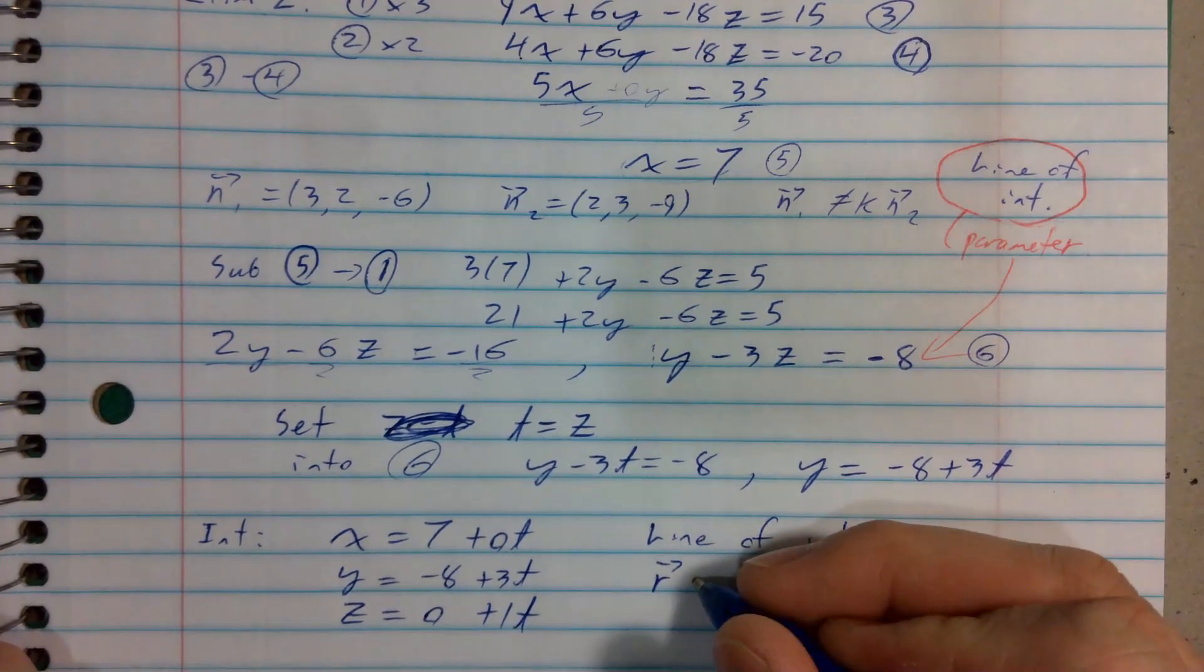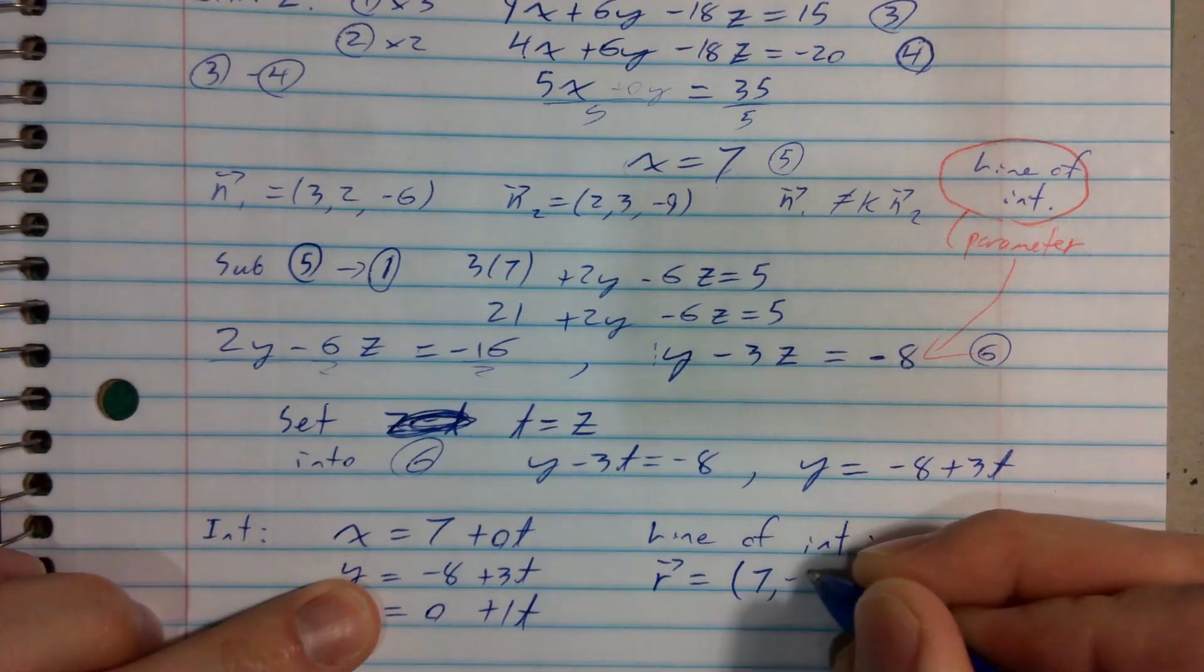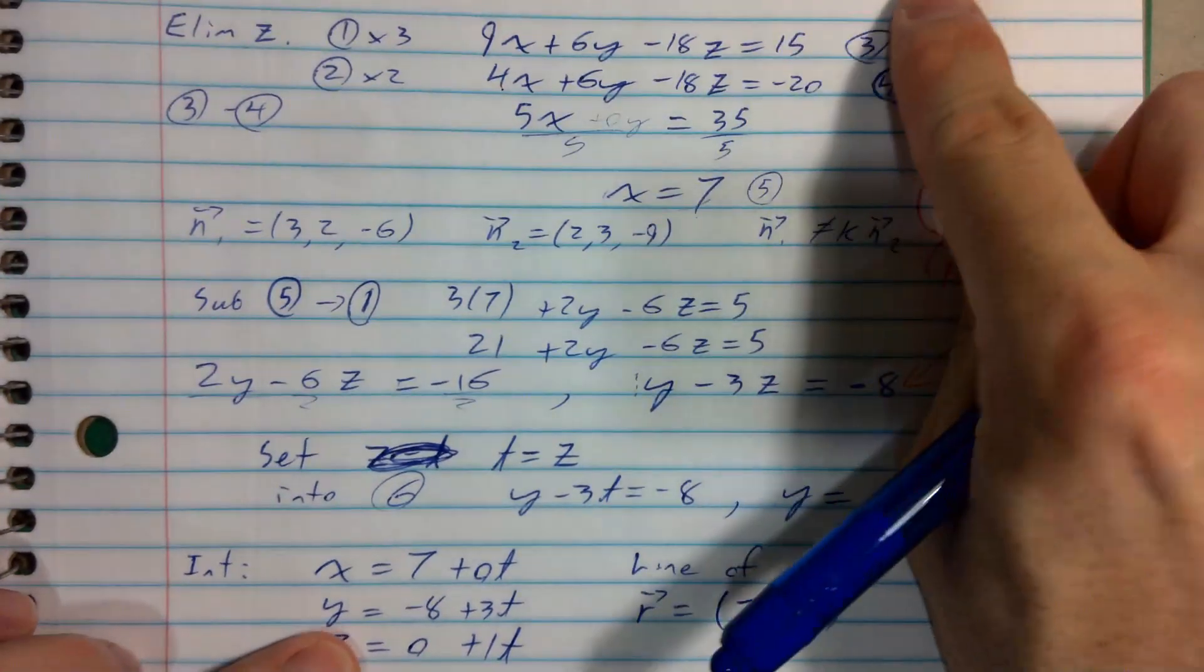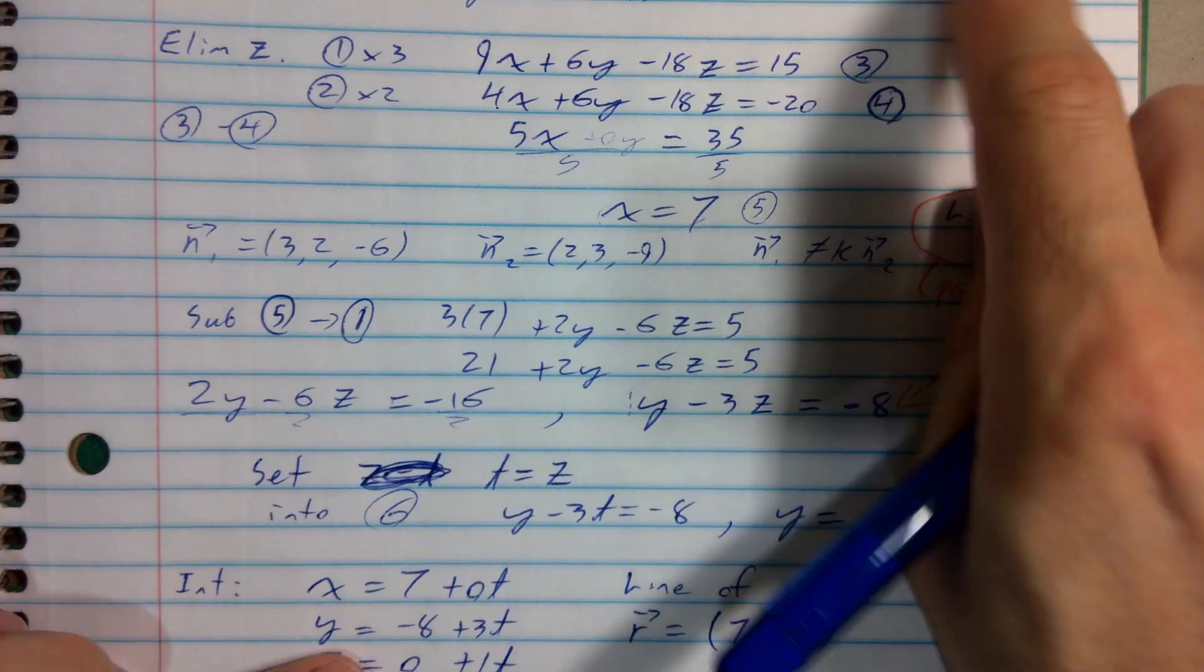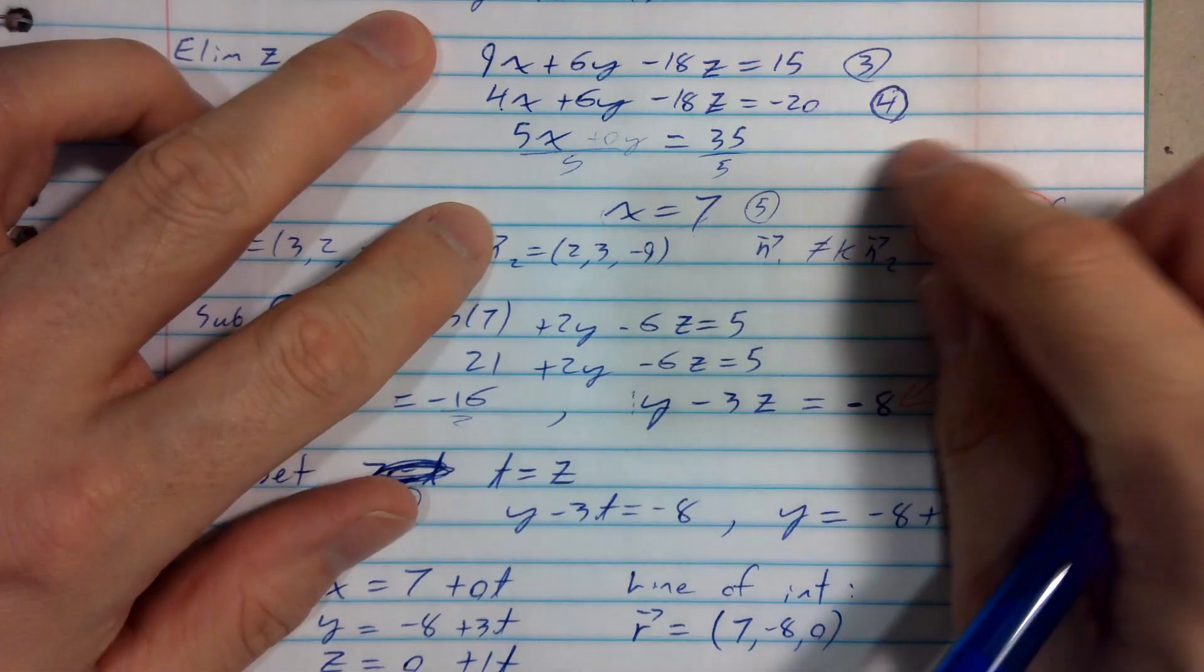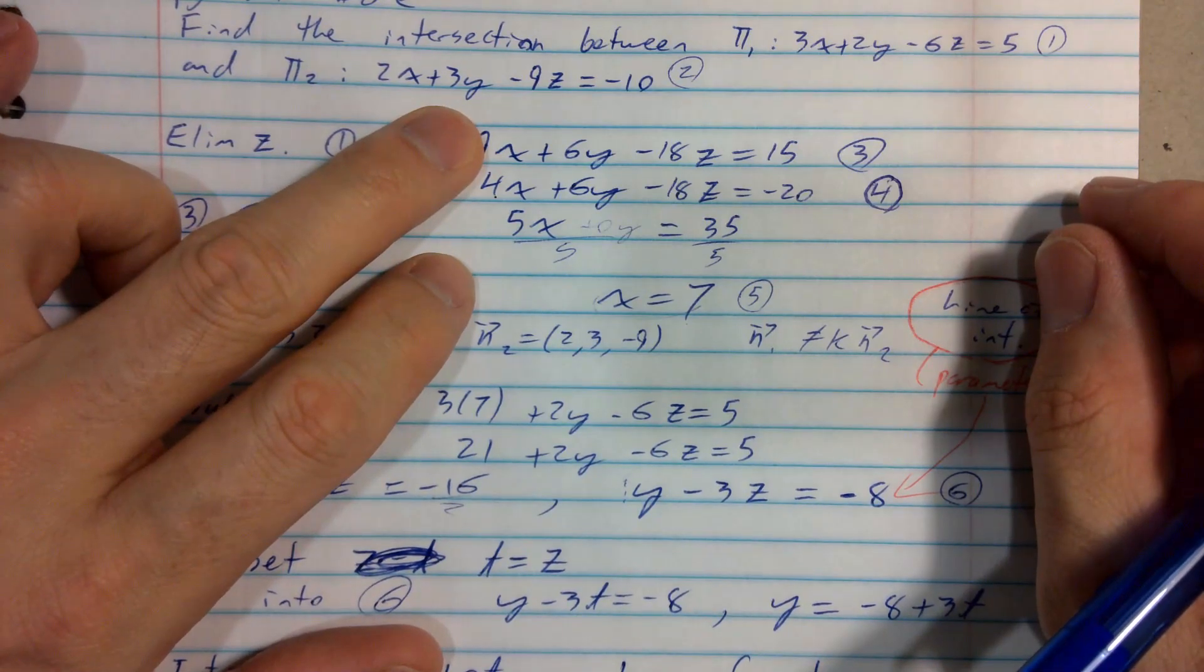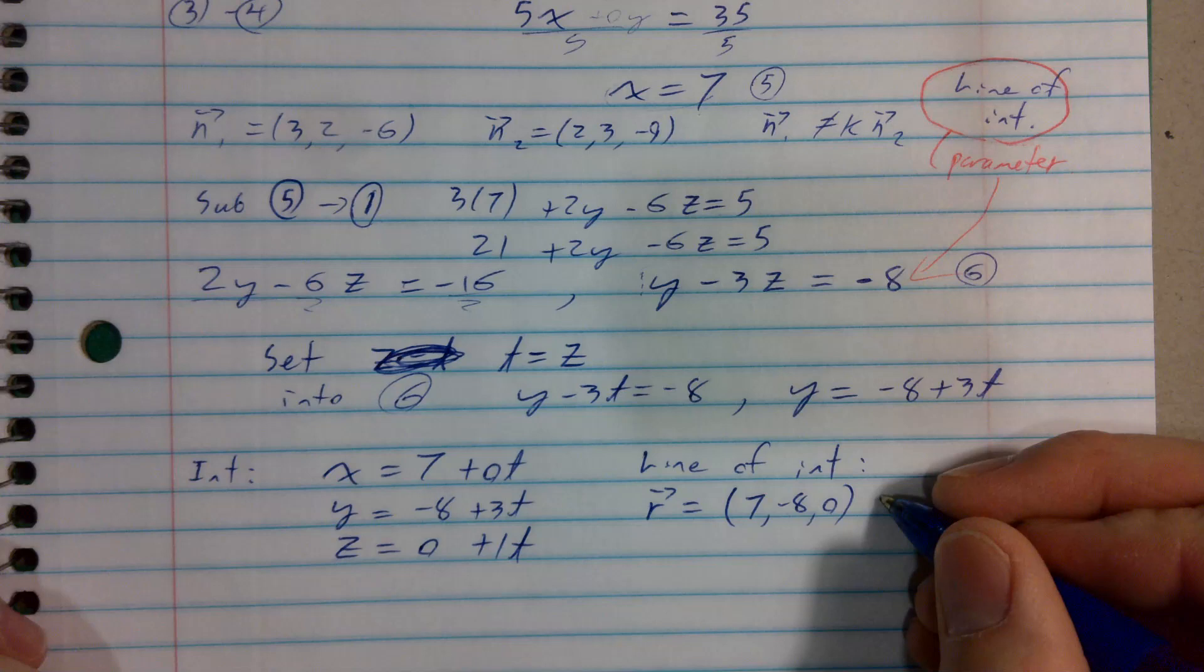So here's our line of intersection in vector form. The line of intersection's vector equation would be, looks like we've got a p0 of 7, negative 8, 0, which you can check is on both of these planes. 21 minus 16 is 5. And 14 minus 24 is negative 10. Satisfies both of those equations.